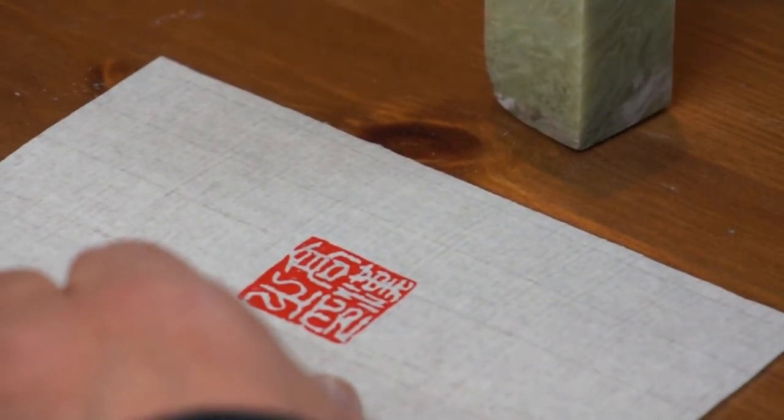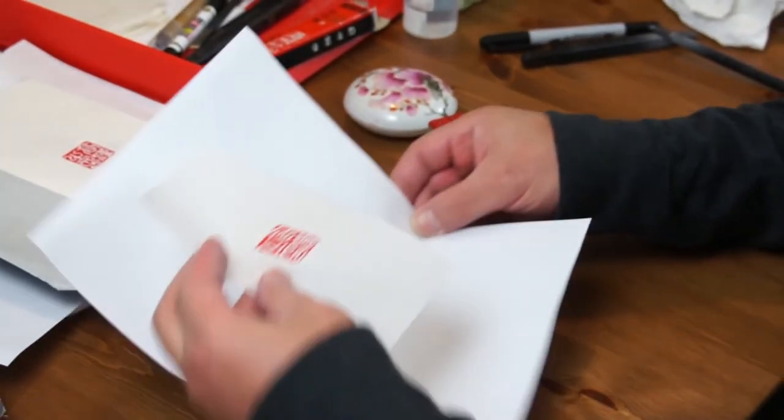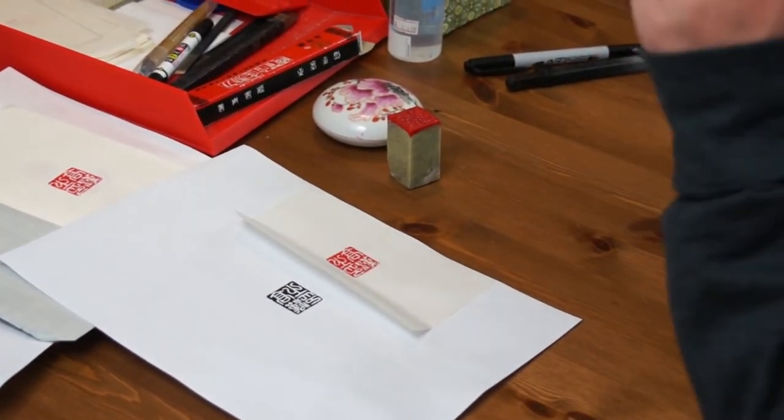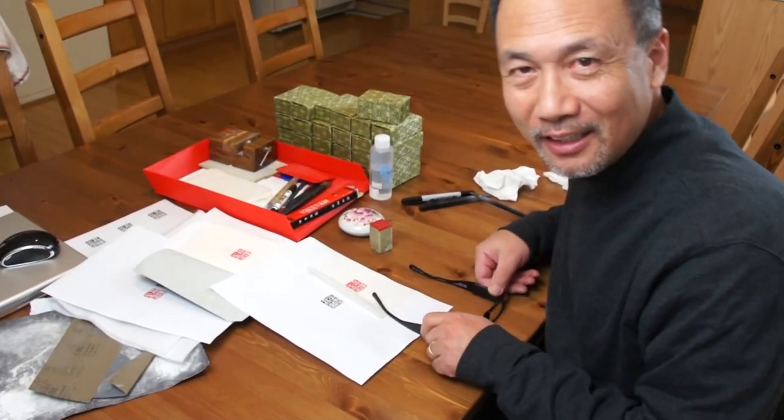And that's how I make this kind of Han style, Han official style script name seal, and will be used on the certificate for his students of Kung Fu or Tai Chi.